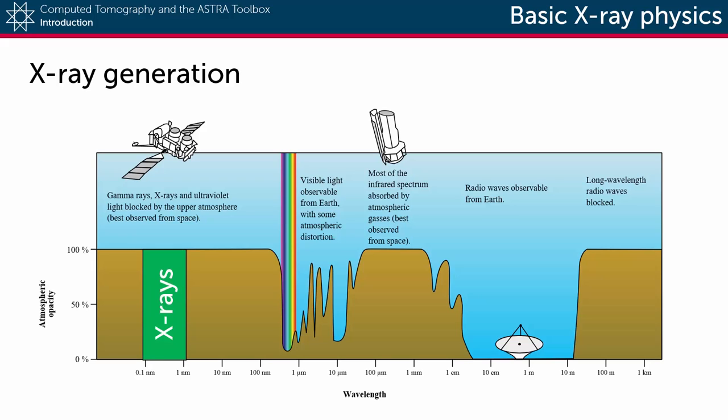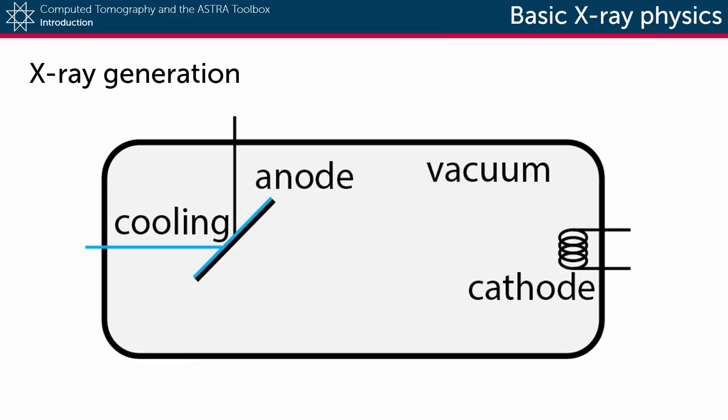They are created in an X-ray tube which is basically a vacuum inside a glass container that holds a cathode on one side and an anode that is typically made out of tungsten on the other side.